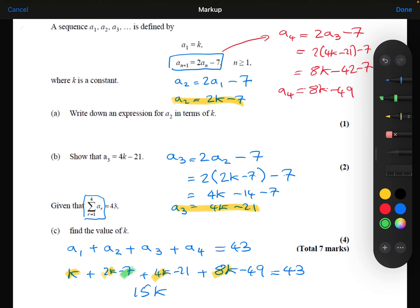Then collecting up the minus 7, the minus 21 and the minus 49, that gives me minus 77 equals 43. Add the 77 to both sides. So I get 15k is equal to 120. So k is equal to 120 divided by 15, which is 8.